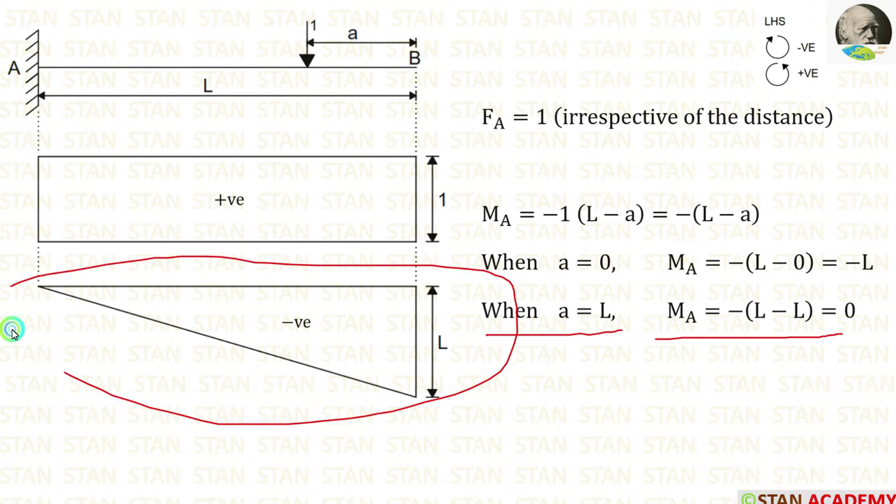Using that we can make this diagram. When A is equal to 0, it will be minus L. When A is equal to L, it will be 0.